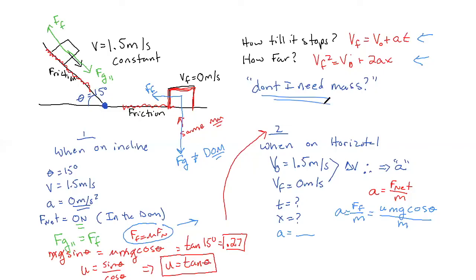So once again, do we need mass? No. We can get rid of mass and say that the acceleration of this box on the horizontal surface is just mu times G times the cosine of the theta of that angle.